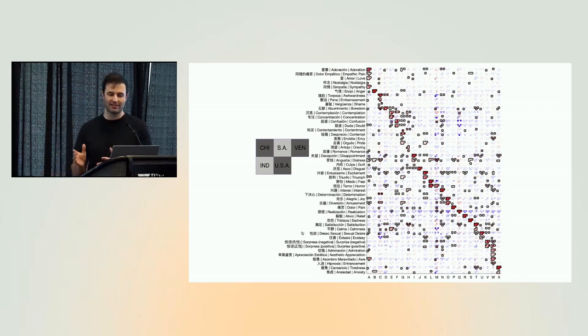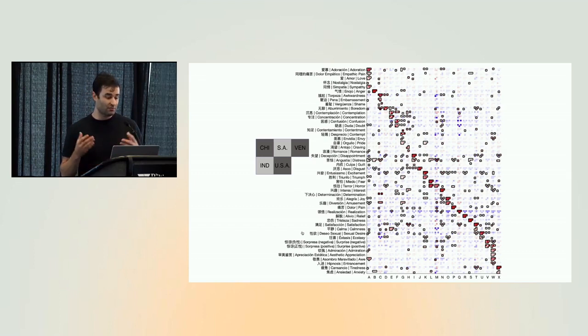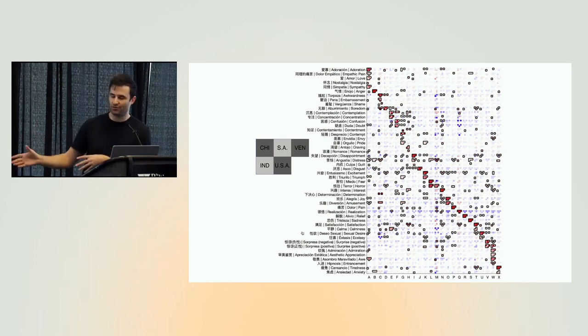So for one thing, the meanings of vocal bursts are very consistent across cultures. Much more so than, for example, facial expressions and speech prosody. So we've trained models to predict judgments of each inferred emotion and mental state within each culture separately in the native language of that culture. So we are predicting adoration and its most direct translation into Spanish and Chinese in this case, and the same judgment from English speakers in India and the US.